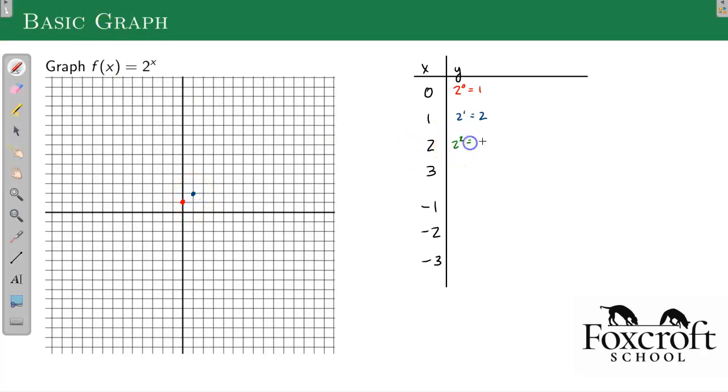Next, 2 squared. 2 copies of 2 is 4. So 2, 4 is on my graph.